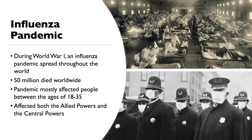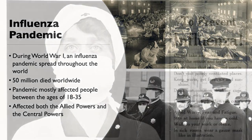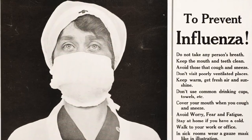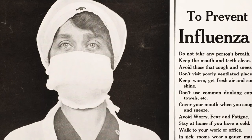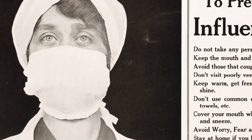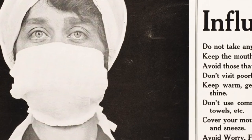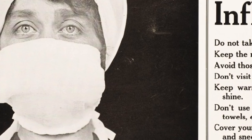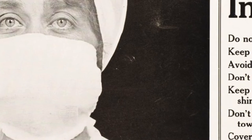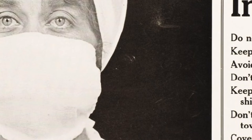During World War I there was also an influenza pandemic that spread throughout the world. 50 million people died worldwide — more people died from the pandemic than from the actual battles. The pandemic mostly affected people between the ages of 18 and 35 and affected both the Allied Powers and Central Powers. It was called the Spanish flu because Spain was the first to report it in their uncensored newspapers, as they were neutral. The origins are disputed: some theories believe it started at a military camp in Kansas and was brought to Europe, while others theorize it may have originated in France or Asia.